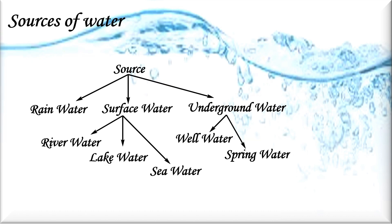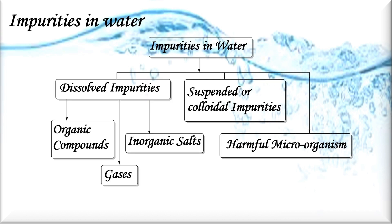Sources of water include rainwater. In surface water we have river water, lake water, and sea water. In underground water, for example, well water and spring water. Rainwater is the purest form of natural water because it is obtained as a result of evaporation from the surface. Water is found in the free state as ice, snow, and water vapor, as well as in the combined state. Pure water has a pH of 7, meaning it is neutral, colorless, odorless, and tasteless, and is a poor conductor of heat and electricity.